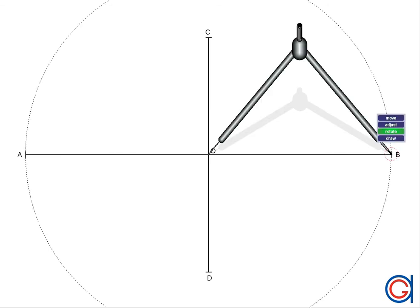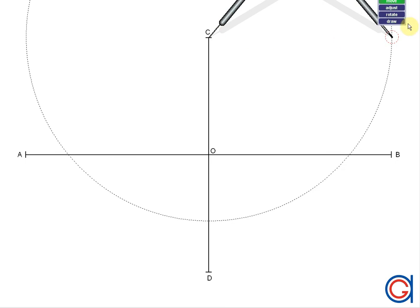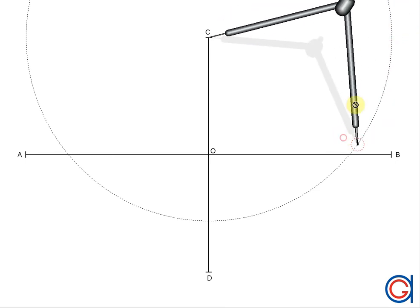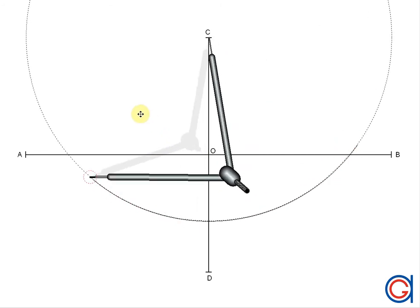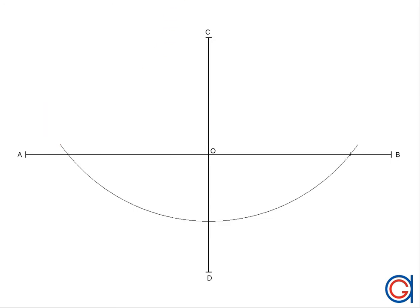The first thing we are going to do is to locate our two focal points. To do this, we set our compass to radius OB, which is half of the horizontal axis. And now, with our compass set on point C, we are going to scribe an arc which cuts our horizontal axis at two points, which will be our focal points F and F'.